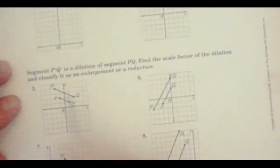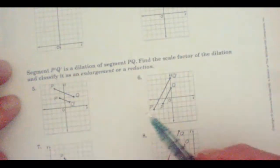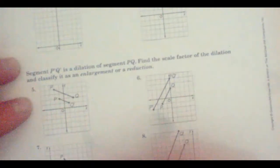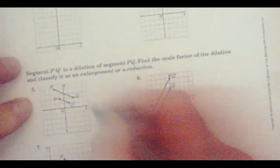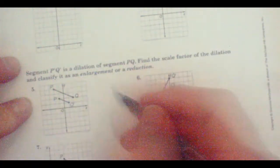Now we're looking at a segment. Segment P prime Q prime is a dilation of segment PQ. Find the scale factor. Well, what we need to do is take a look at one point. I always take ones in this quadrant here. And we'll look at Q.